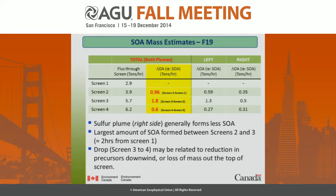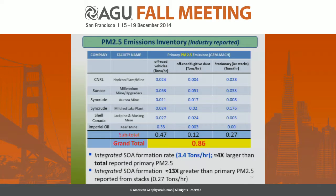When you subtract them, you get about one to two tons of SOA being formed per hour. You can subdivide it into the left and right plumes, but overall there's about one to two tons per hour being formed. Comparing this to what industry reports as primary PM 2.5, our overall integrated SOA formation rate of about 3.4 tons per hour is about four times larger than all the PM 2.5 reported by industry, and about 13 times greater than the primary PM 2.5 from all the major stacks and stationary sources. Pretty clearly, SOA is an important part of the mix here.